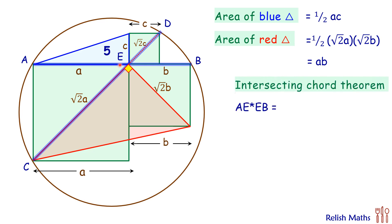we get AE times EB equals CE times ED. Putting the values, AE times EB is a times b and CE times ED is root 2a times root 2c.